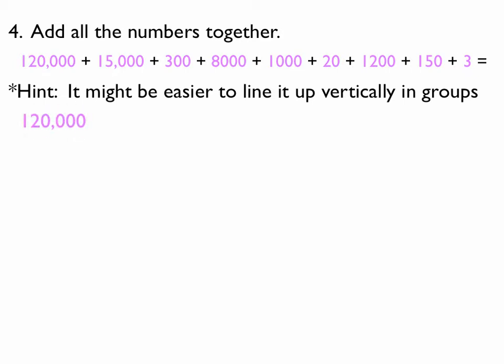So, I'm going to have 120,000, 15,000, and 300. I'm going to add all those together. And I end up with 135,300.